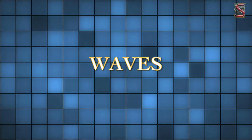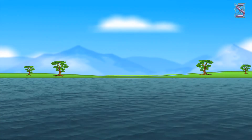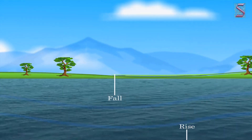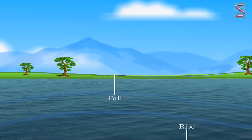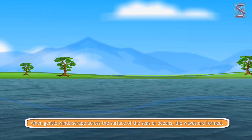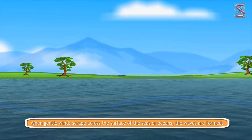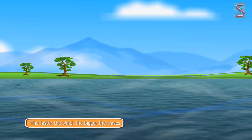Now, let's have a look at waves, currents and tides in detail. Students, all of you must have seen waves in the sea, isn't it? The movements of rise and fall of the water on the surface of the oceans are called waves. When gentle winds scrape across the surface of the seas or oceans, the waves are formed. The faster the wind, the bigger the waves.